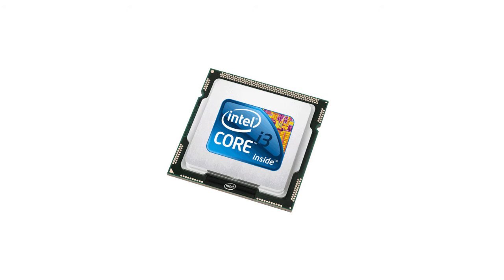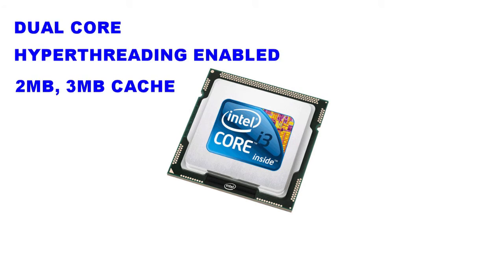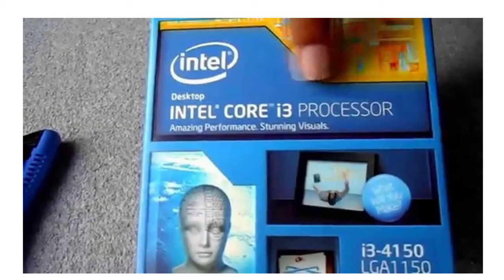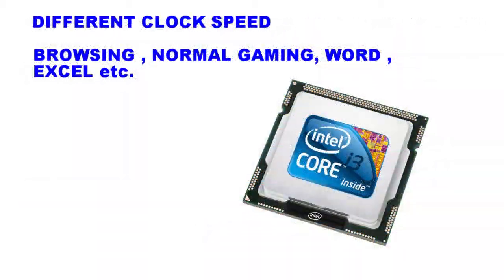i3 processors are the basic processors with dual core, for both laptop and desktop. Hyperthreading is enabled — this is the technique to split each core into two threads, allowing the operating system to use cores more efficiently. Essentially, a dual core processor with hyperthreading works like a quad core, though it doesn't double performance. i3 processors come in different variants such as 4150 and 4220, each with different clock speeds and cache memory such as 2 or 3 megabytes.